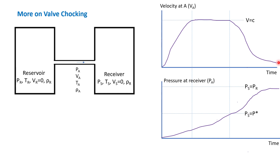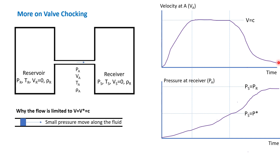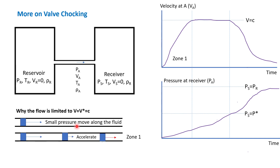So how do we explain this? Remember the definition of sonic velocity — we can imagine it as a small pressure wave moving along the fluid. At zone one, you have a potential high velocity at this region, and since the PS is very low, there is no resistance. This will push the movement of gas and result in an accelerated pressure.